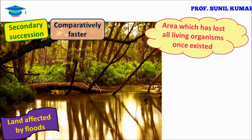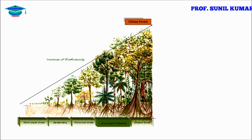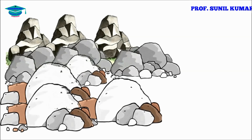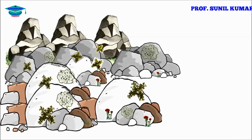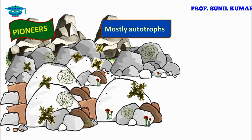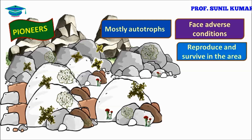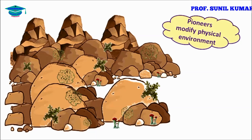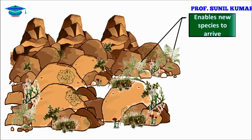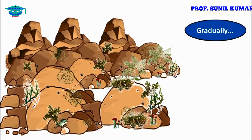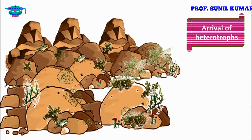The developmental stages of ecological succession are called seral stages. The first organisms of the first seral stage are called pioneers. In mountainous or desert areas, lichens become the pioneers, and in aquatic environments, algae become the pioneers. Pioneers face adverse conditions and modify those environmental conditions so that other living organisms can also survive there.